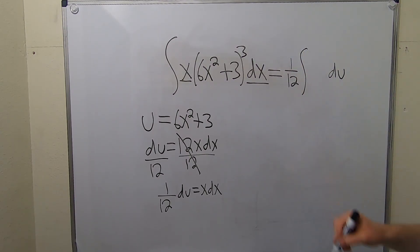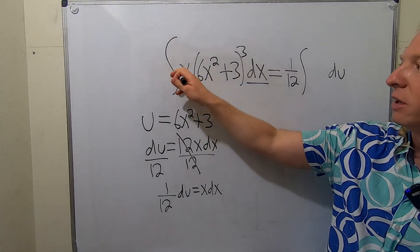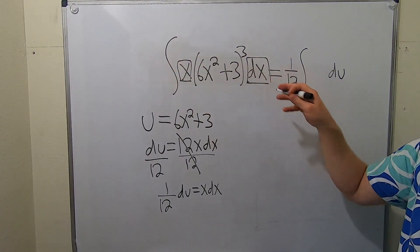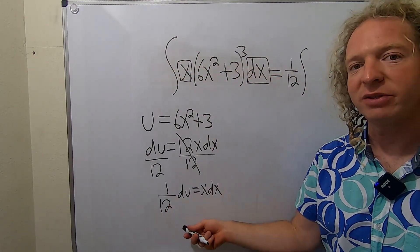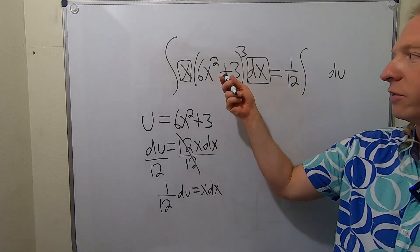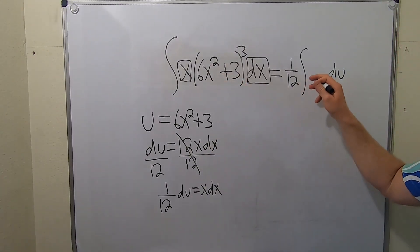So at this point the only thing I've replaced is the x and the dx. x dx became this. So what's left? You're just left with this piece, but we know that piece is u. So we have u cubed.